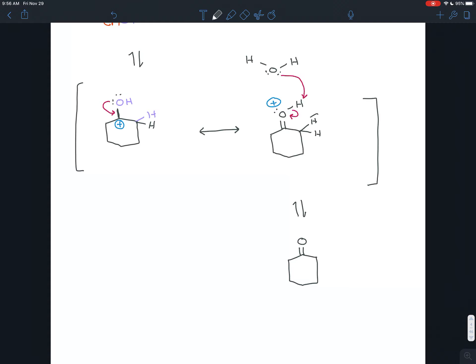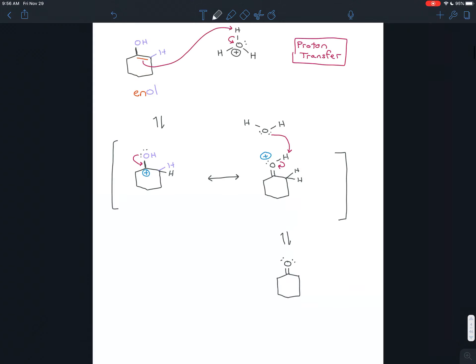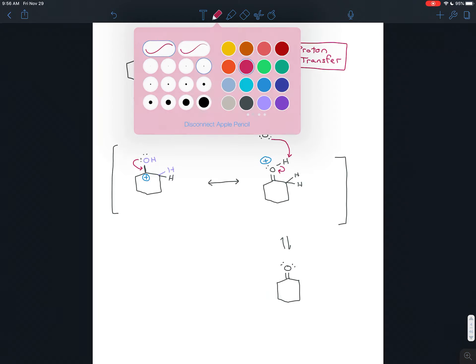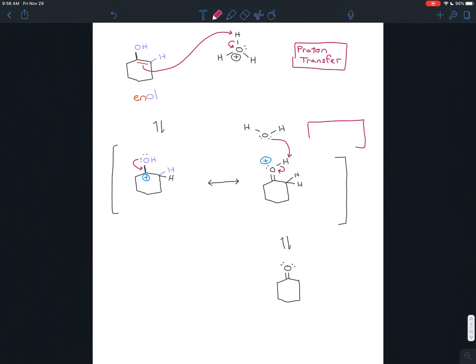So I'm not going to draw these hydrogens in. They're there. They're just implied in the skeletal structure. And so now you have your ketone. So you started with an enol and you end up with the ketone. And what happened is just two successive proton transfers.